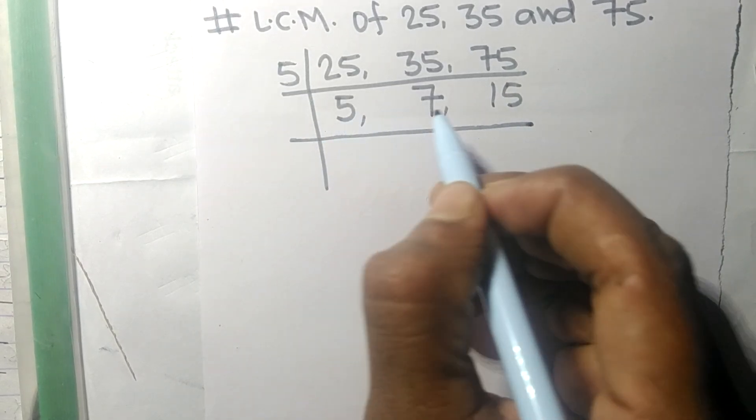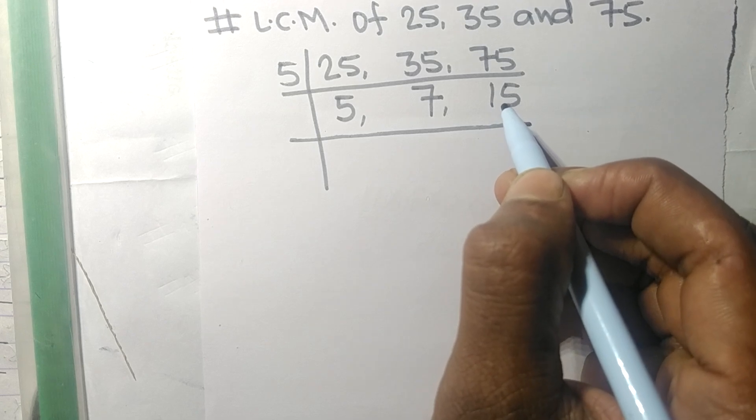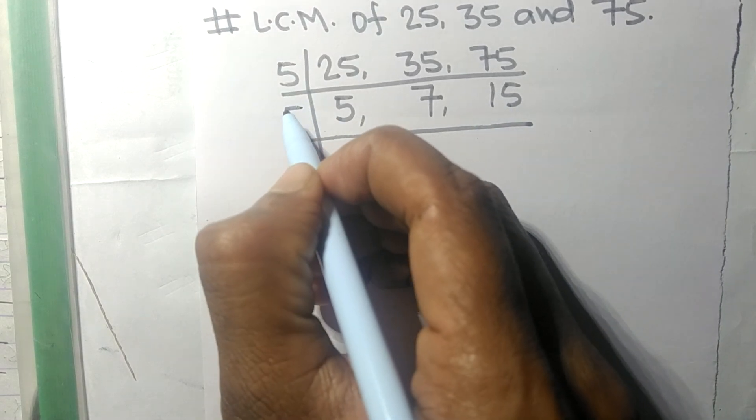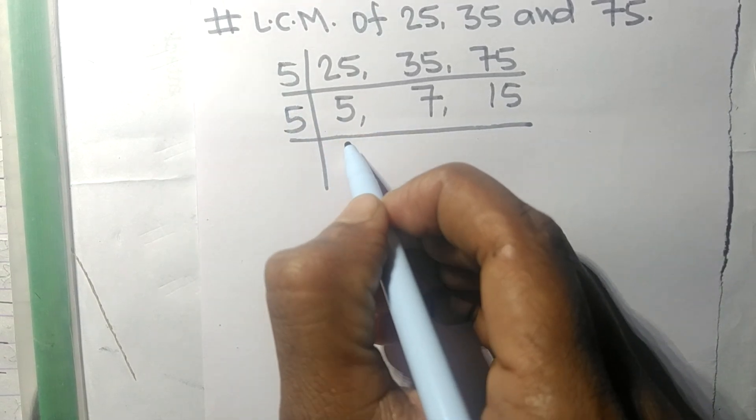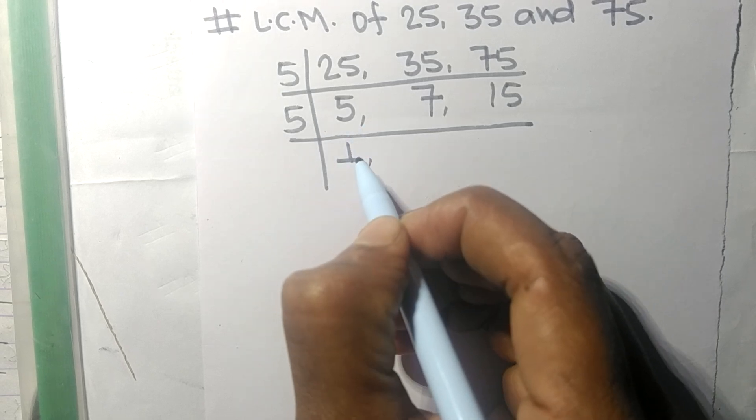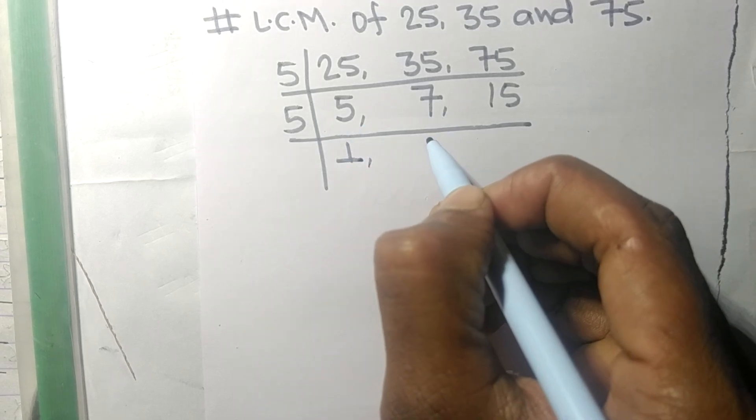These 5 and 15 are exactly divisible by 5, so 5 times 1 means 5, 7 is not divisible so it stays the same, and 5 times 3 means 15.